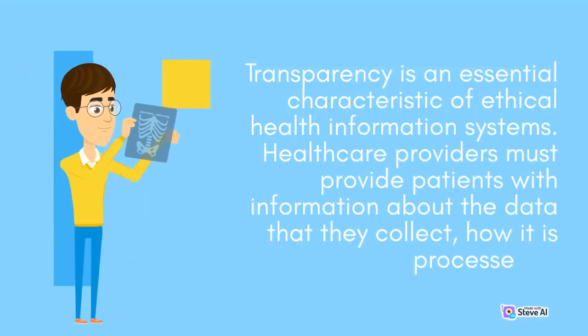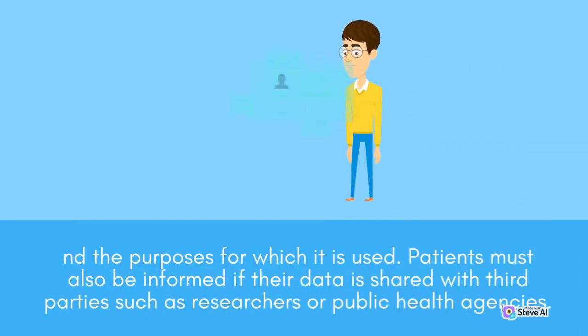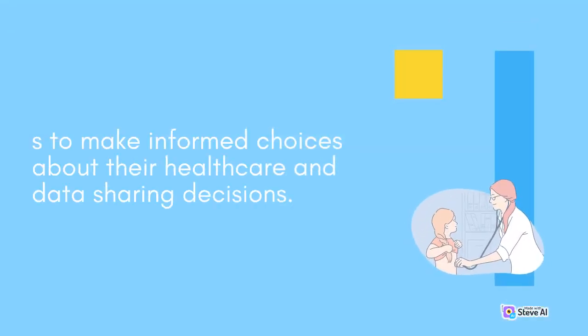Transparency. Transparency is an essential characteristic of ethical health information systems. Health care providers must provide patients with information about the data that they collect, how it is processed, and the purposes for which it is used. Patients must also be informed if their data is shared with third parties such as researchers or public health agencies. Transparency promotes trust between health care providers and patients, allowing patients to have confidence that their privacy is being protected and their data used ethically. It also allows patients to make informed choices about their health care and data-sharing decisions.